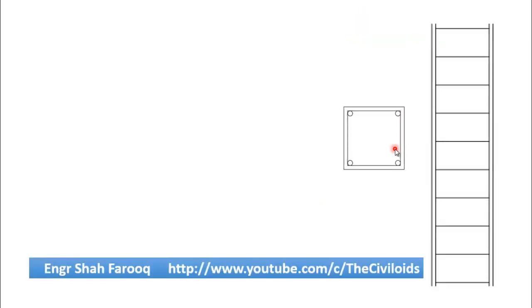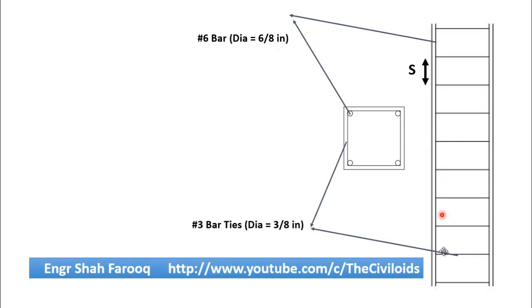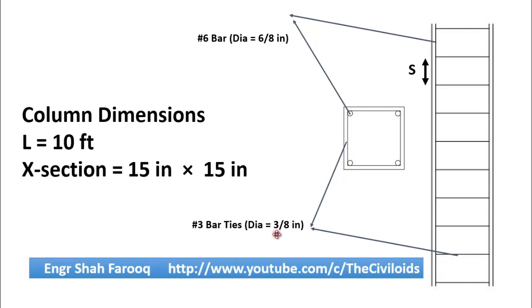For this purpose we have selected a column and we are going to determine the spacing between two ties or rings, represented by S. The bar used for longitudinal reinforcement is a number 6 bar having diameter 6/8 inches, and the bar used for transverse reinforcement or ties is a number 3 bar having diameter 3/8 inches. The column length is 10 feet and its cross-sectional dimension is 15 inches by 15 inches.